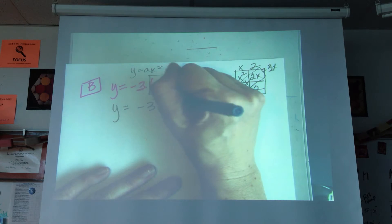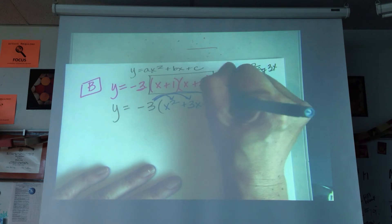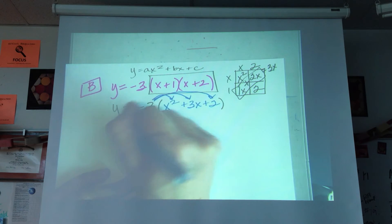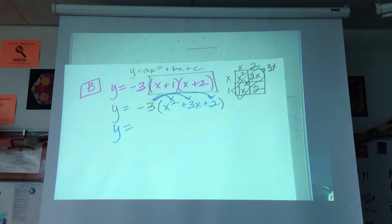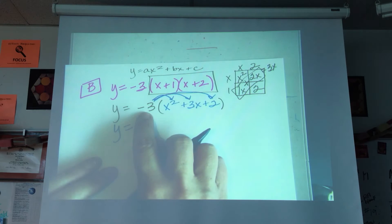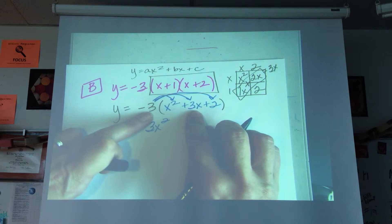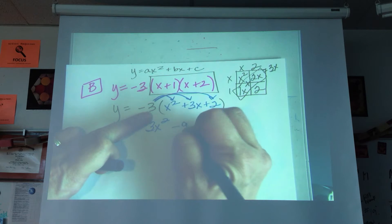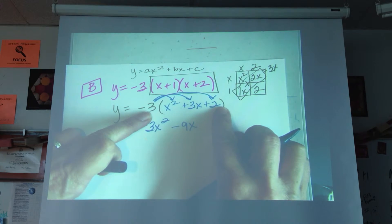So then I'm going to distribute. I know a couple people were missing parts of the distributing, and that means that my negative 3 has to be multiplied by X squared, negative 3 times positive 3X, negative 3 times positive 2.